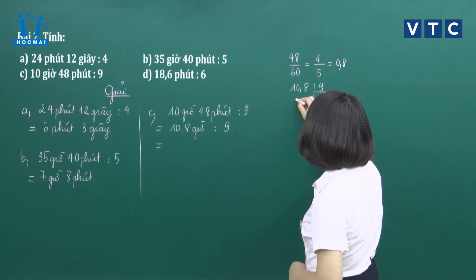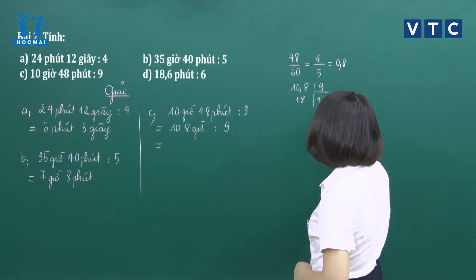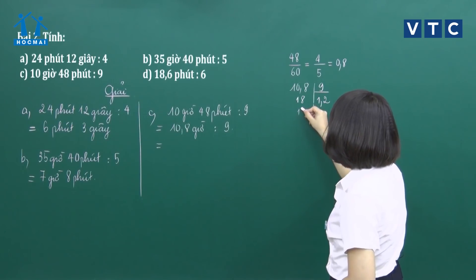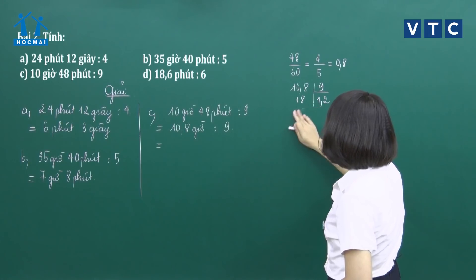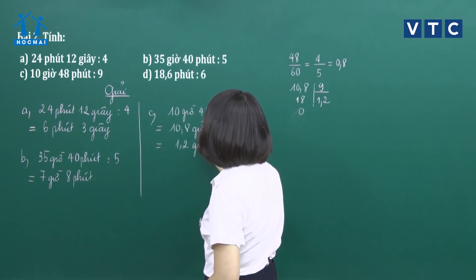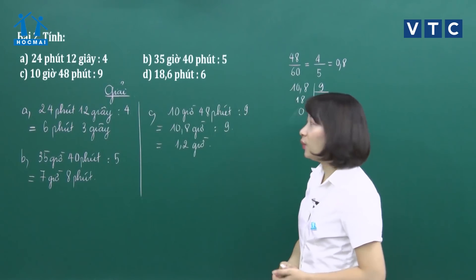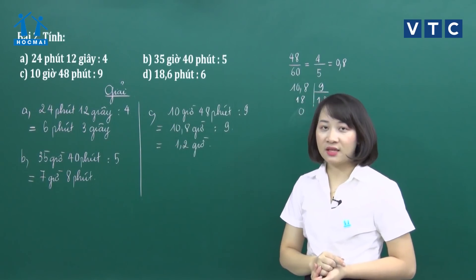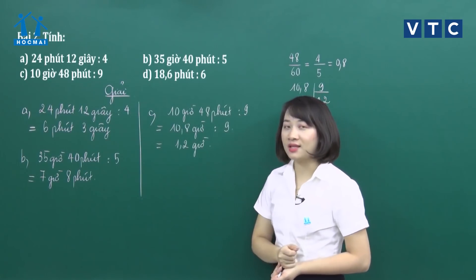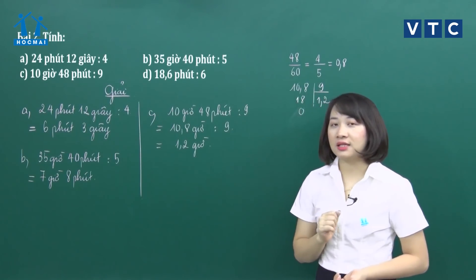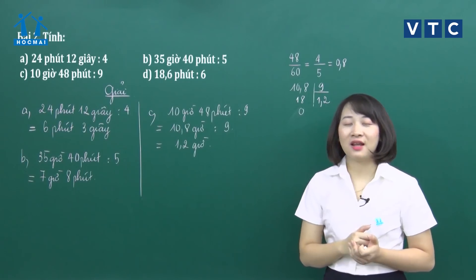Cách đổi khác: đổi từ giờ sang phút. 10 giờ bằng 600 phút. 600 cộng 48 là 648 phút. Lấy 648 chia cho 9 ra đơn vị là phút. Từ đó các con có thể để nguyên đơn vị phút hoặc đổi ra giờ. Câu D: 18,6 phút chia cho 6. Thực hiện: 18 chia 6 là 3, hạ 6 xuống — 6 ở phần thập phân nên đánh dấu phẩy vào thương; 6 chia 6 được 1. Kết quả là 3,1 phút.